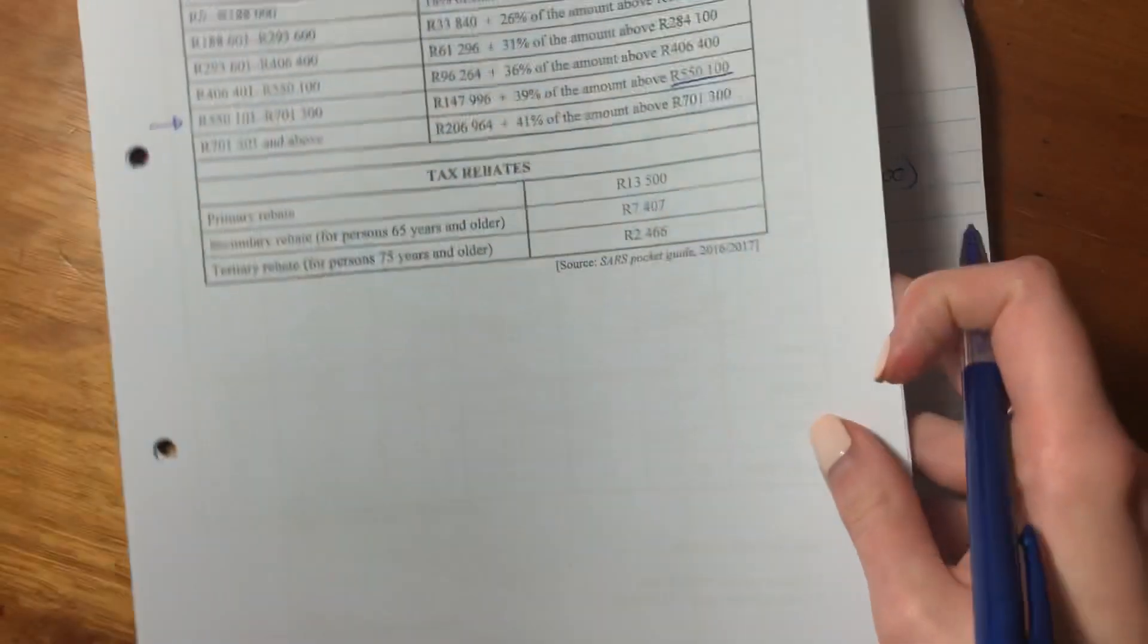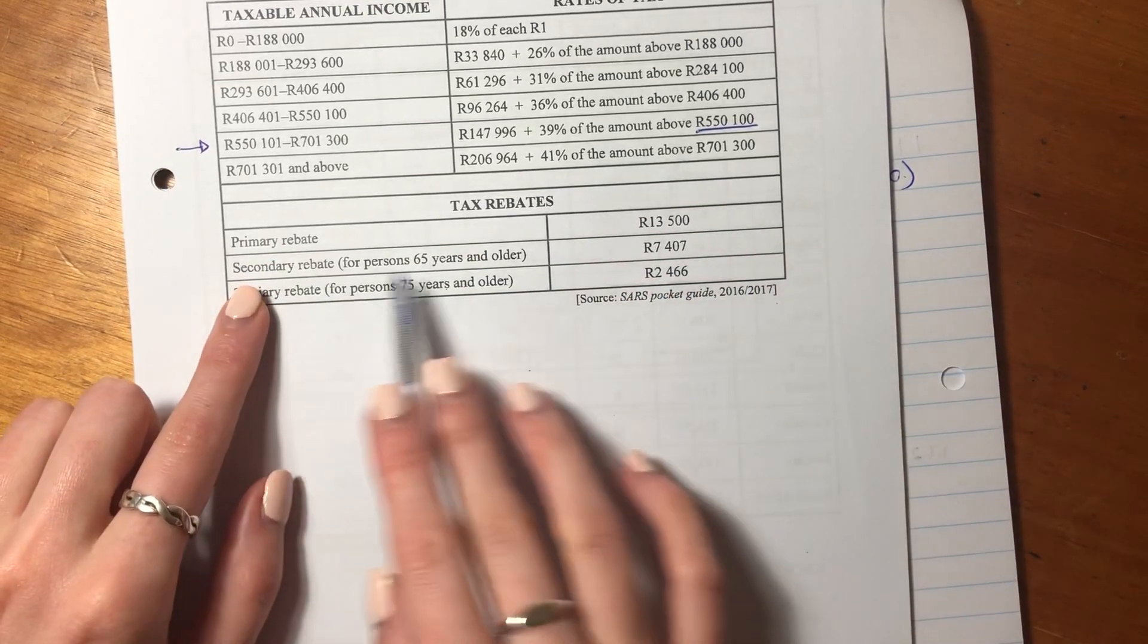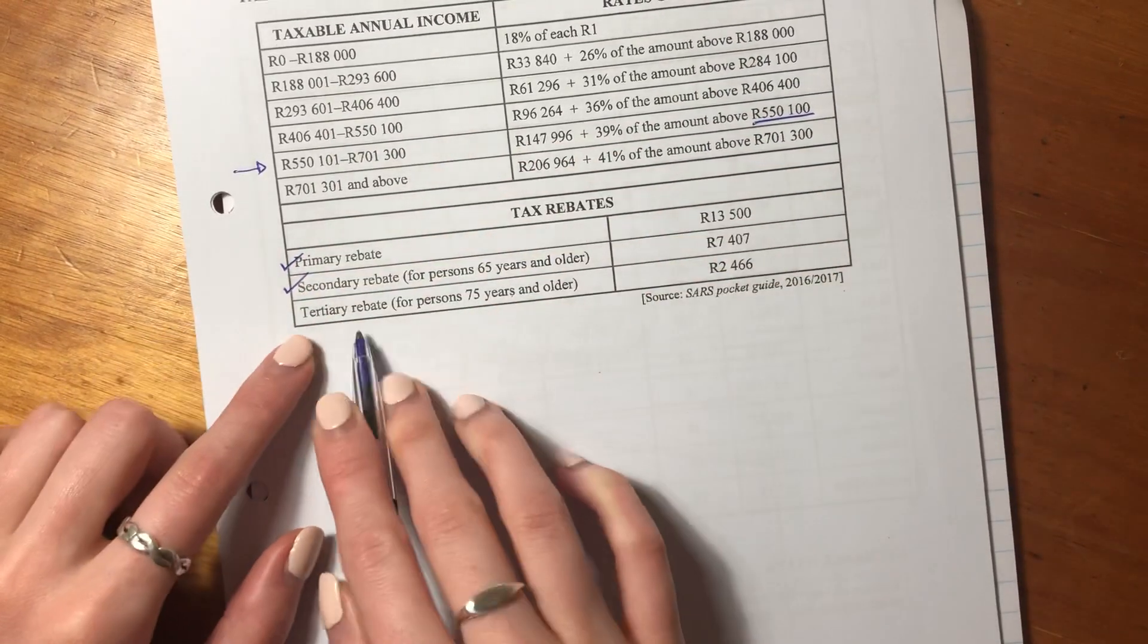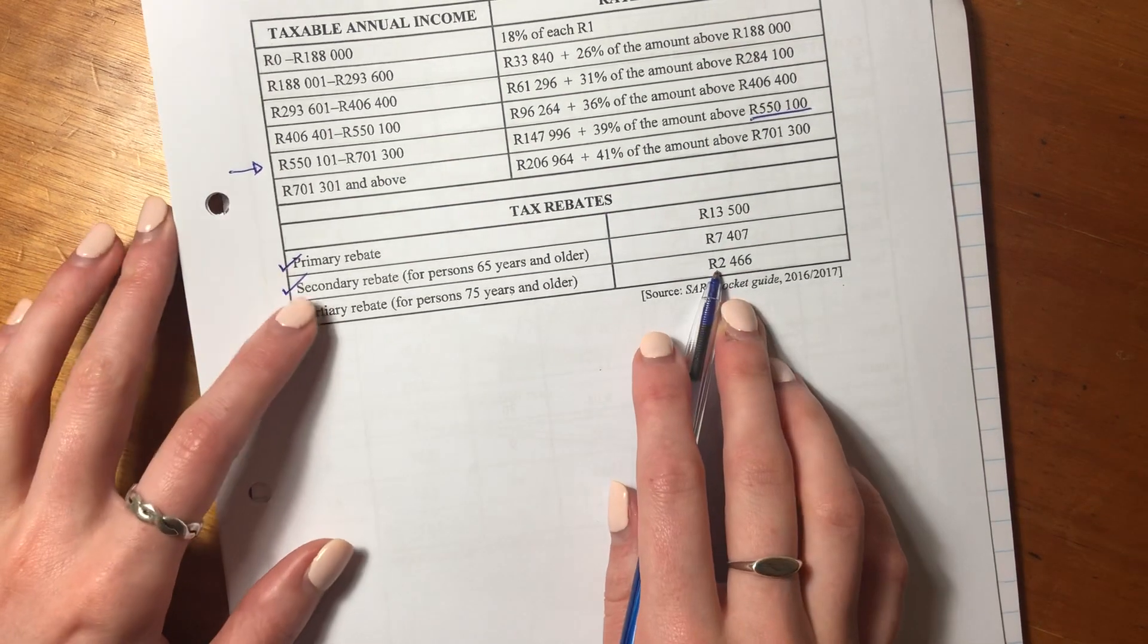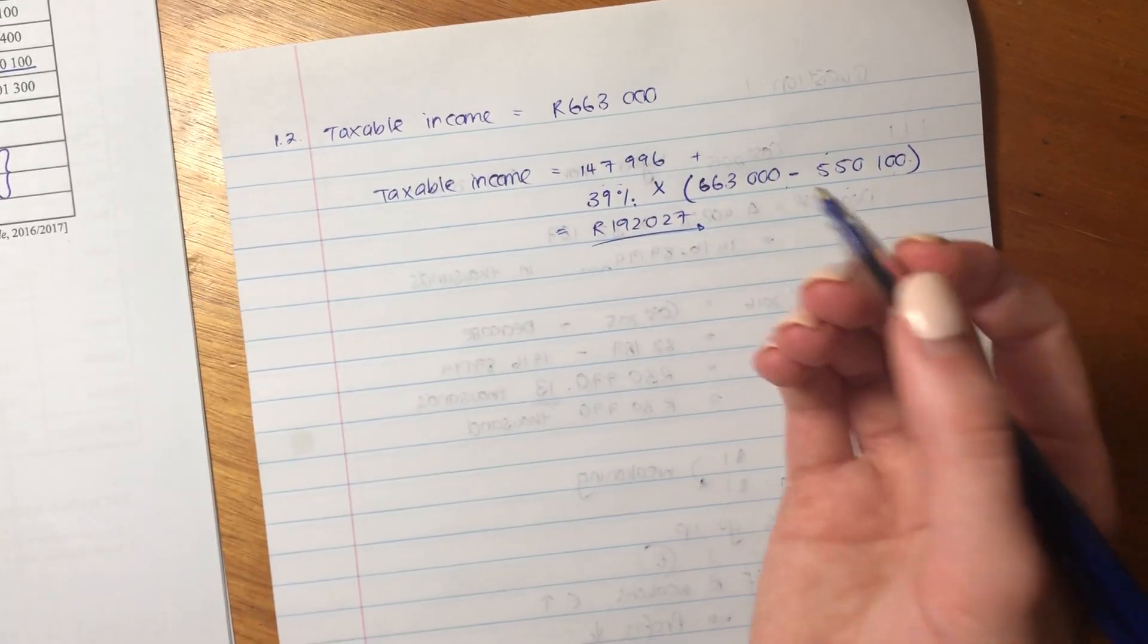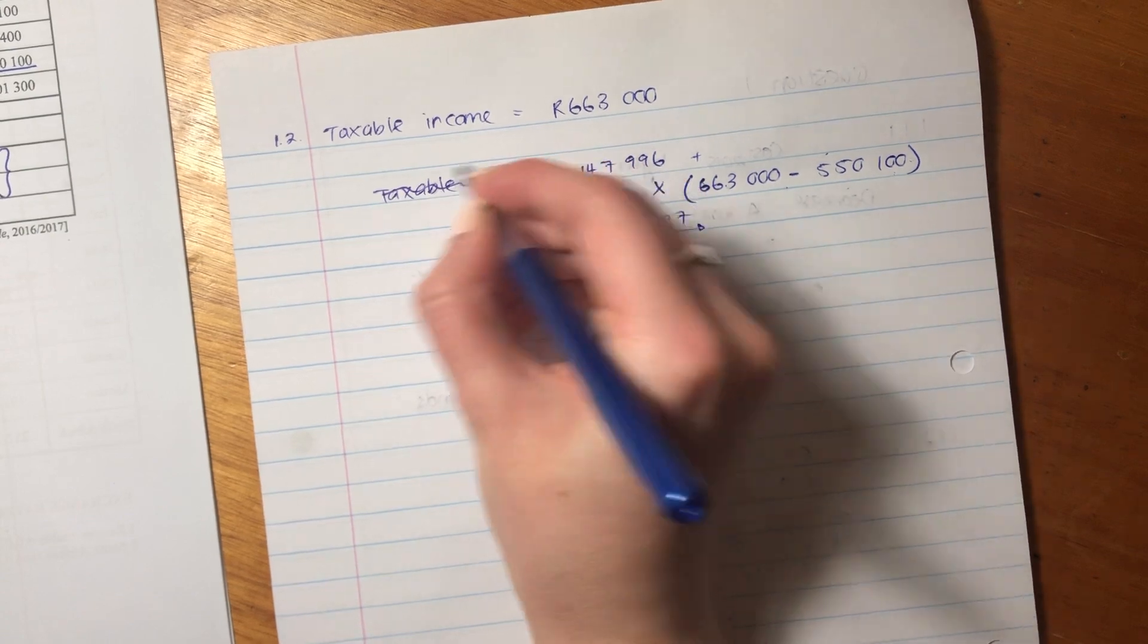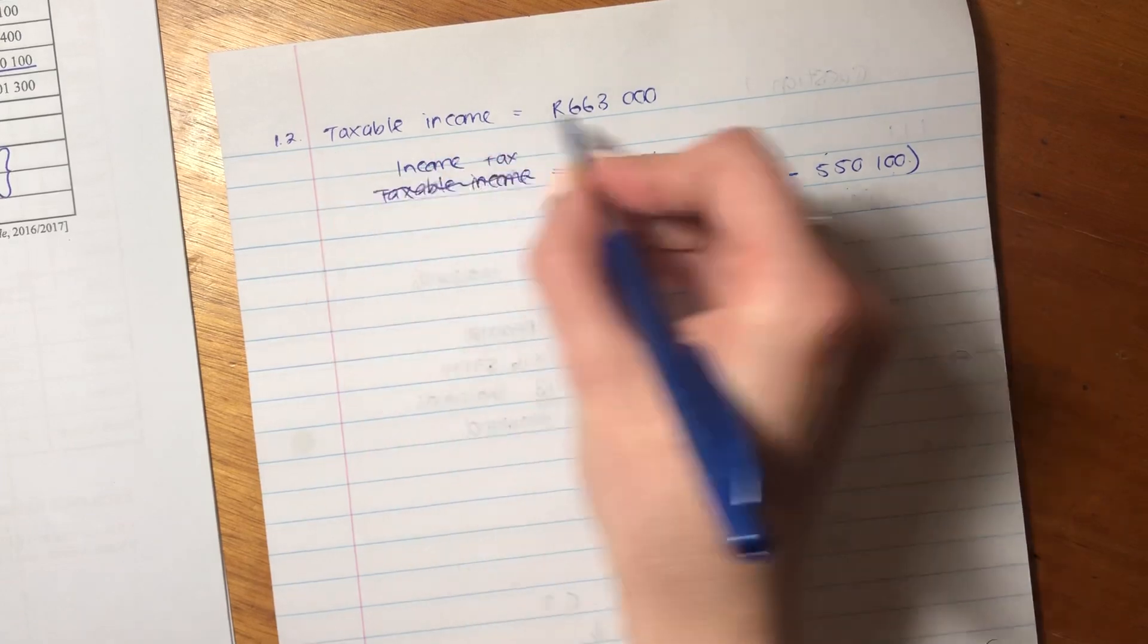But we know that everyone gets at least the primary rebate, and our director is 68, so he's going to get both of these rebates. He's not going to get the tertiary one because he's only 68—you have to be over 75 to get that one. But we're basically going to subtract both of these from the amount we just calculated to get his income tax. Because his taxable income is the amount he earns; this is actually his income tax.